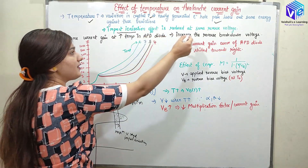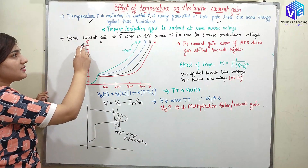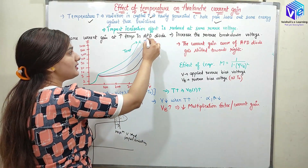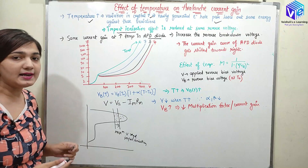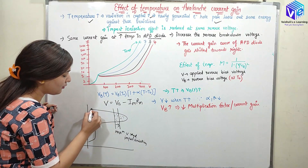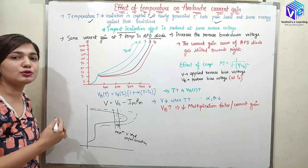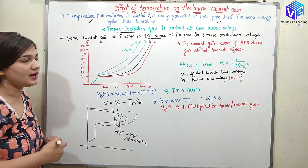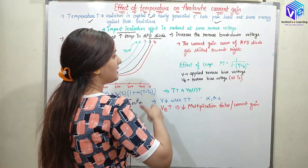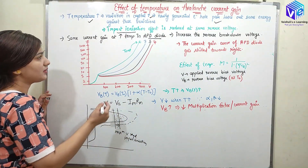These impact ionizations are reduced, due to which I am going to get lesser carrier multiplication. The impact ionization effect is reduced at the same reverse voltage. I can say the same current gain at increasing temperature in the avalanche photodiode requires an increase in the breakdown voltage. You can see the current gain curve of the avalanche photodiode is shifted.